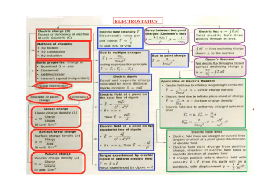Next: electric dipole. Definition — it is equal and opposite charges separated by some distance. The dipole moment p vector equals 2a·Q vector. Electric field at a point on the axial line of a dipole: E vector equals 2kp vector·r divided by (r² minus a²) squared. If r is much greater than a, then E vector equals 2kp vector divided by r cube. For the equatorial line: E vector equals kp vector divided by (r² minus a²) to the power 3/2. If r is much greater than a, then E vector equals minus kp vector divided by r cube.